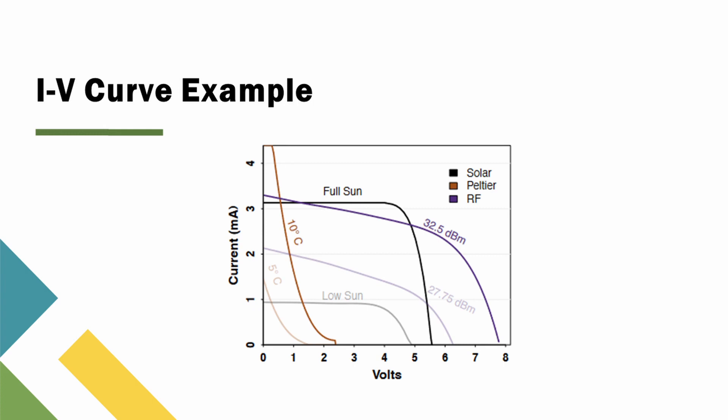In this example, there are six curves, two from each type of energy harvesting, and each pair has different environmental changes: solar in full sun versus solar in low sun, a Peltier generator which produces energy via thermal differentials at different temperatures, and an RF reader at different decibel milliwatts. As one can see, each family of curves maintains a similar shape while still being slightly affected by runtime conditions.